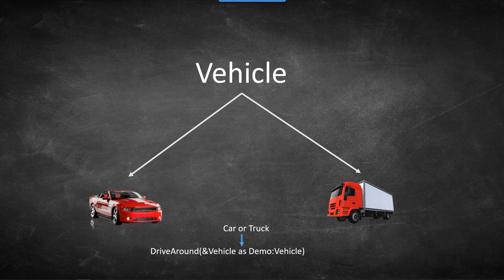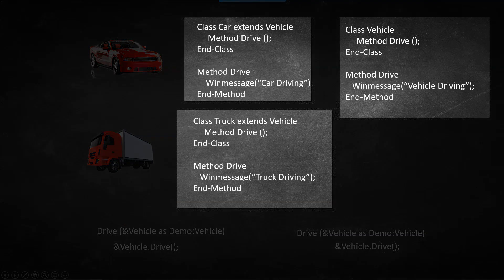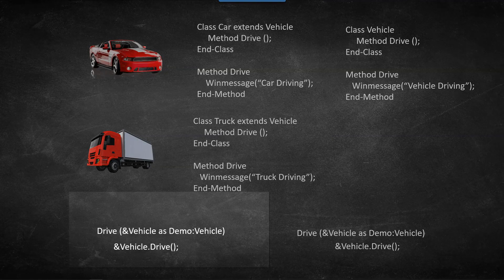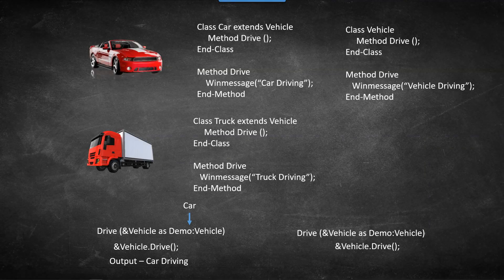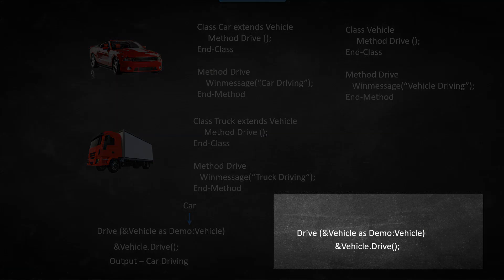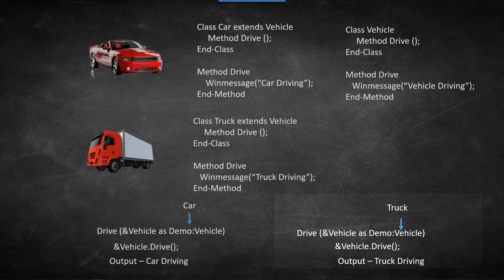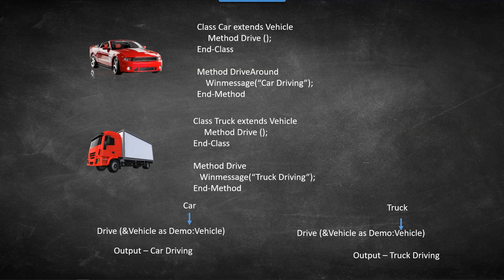The child class has full access to the parent class and can do something more. Let's assume we have a drive method in all three classes, but it is implemented differently. When you pass an instance of car where an instance of vehicle is referenced in your code, it will execute the drive method of the car, not vehicle. Likewise, if you pass the instance of truck where instance of vehicle is referenced, the system will execute the drive method implemented inside the truck class, not vehicle, at runtime. This is nothing but polymorphism.